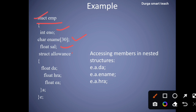Inside struct emp, we are declaring one more structure: struct elements. Inside it, float da (daily allowances), HRA (house rent allowances), and EEA. Next we are declaring two variables: 'a' for elements and 'e' for emp. By using these variables, we can access the members of the structures. For accessing, we have two operators: the dot operator and the arrow operator.